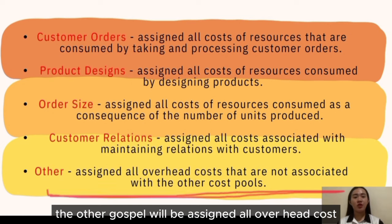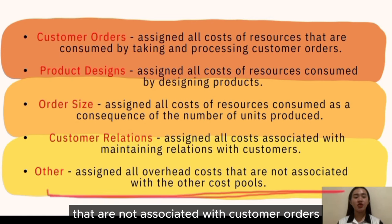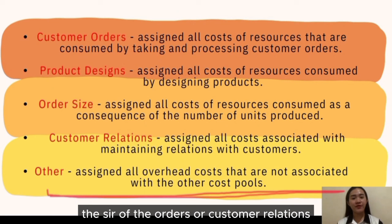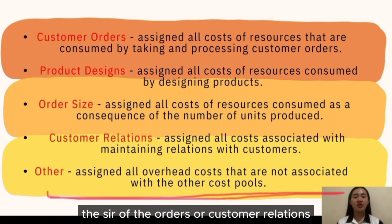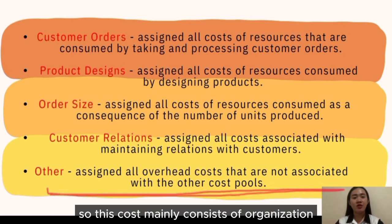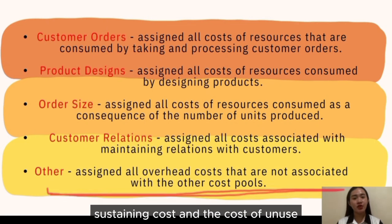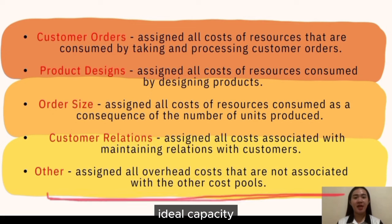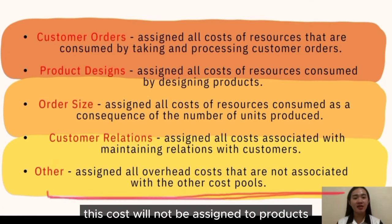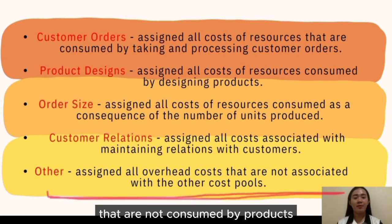The 'other' cost pool is assigned all overhead costs not associated with customer orders, product design, order size, or customer relations. These costs mainly consist of organization-sustaining costs and the cost of unused idle capacity. These costs will not be assigned to products because they represent resources that are not consumed by products.